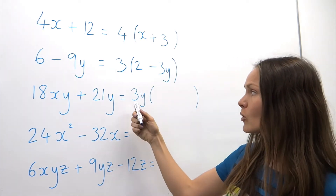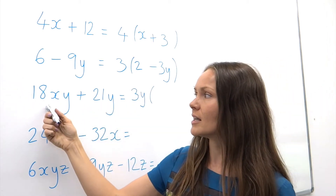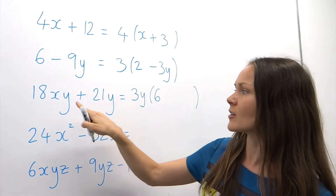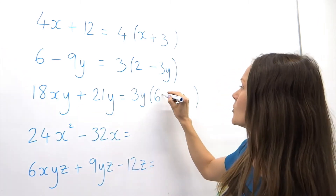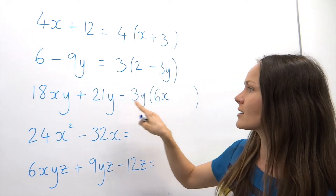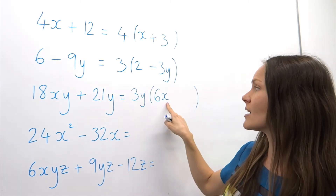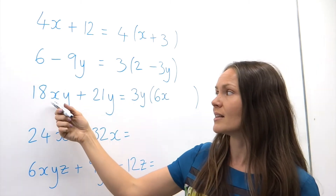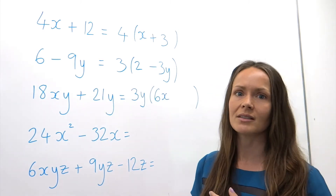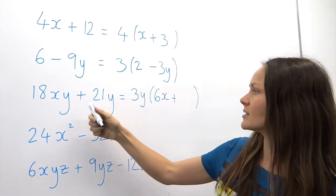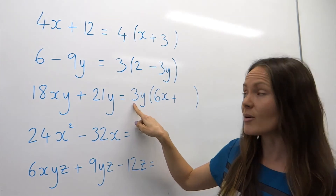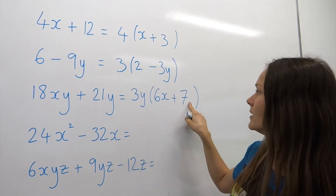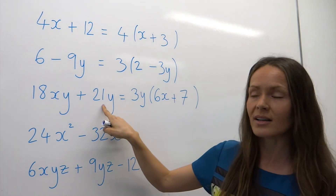Once you've done that, open up your brackets. What do you multiply 3y by to get back to 18xy? Well, 3 multiplied by 6 is 18, so I put in 6, but I also need an x, so I write 6x — because 3y times 6x gives me 18xy. The order of letters doesn't matter; normally we write them alphabetically, which is why I've written xy rather than yx. Then put in the plus. What do you times 3y by to get back to 21y? It's just 7, since the y is already there.